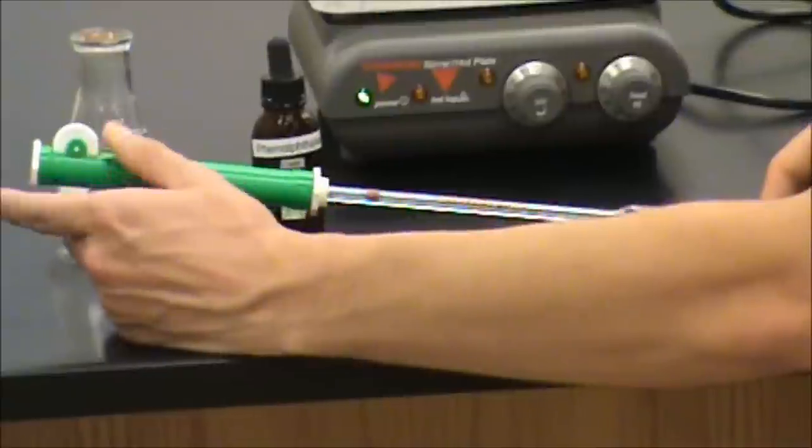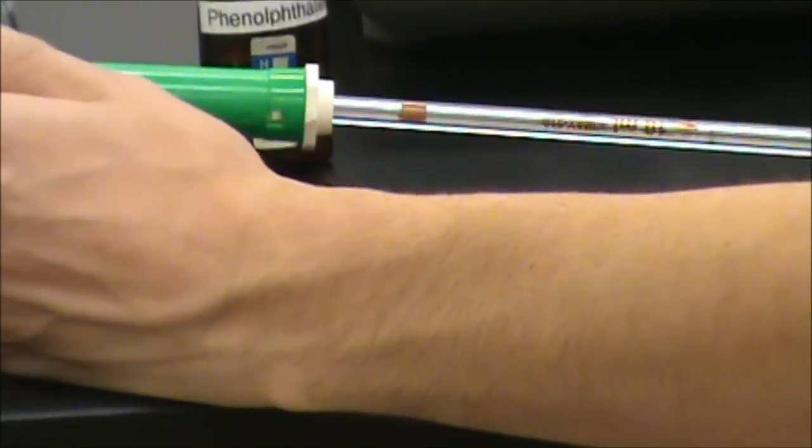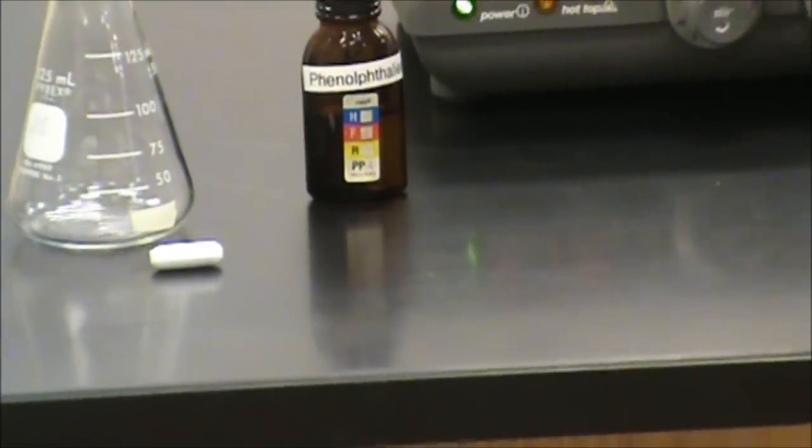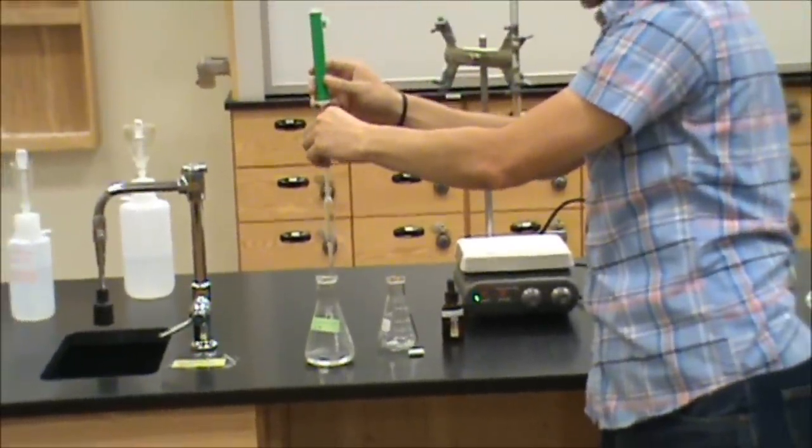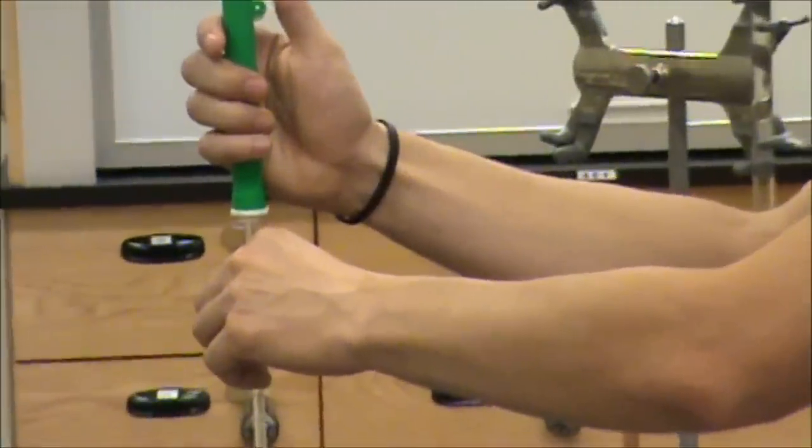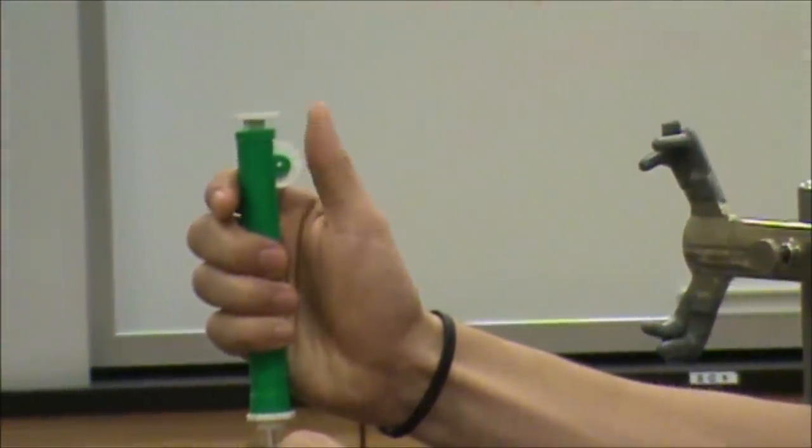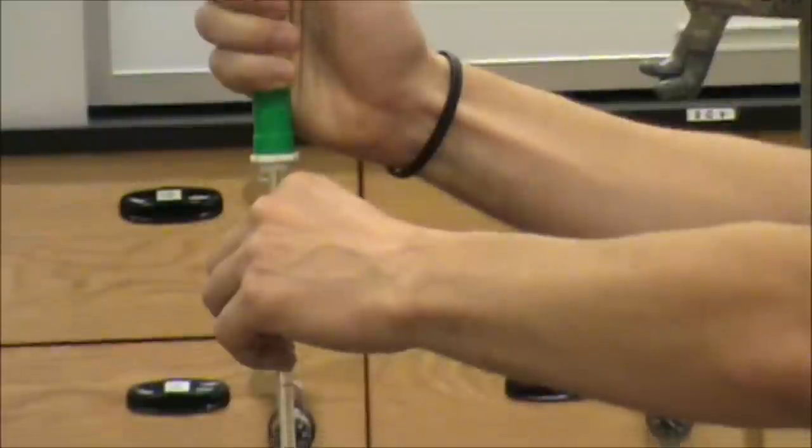In order to operate this, we want to insert it gently but snugly into the end of the pipette pump. When we are ready to measure the fluid, we want to gently use the thumb wheel to draw fluid up into the volumetric pipette.